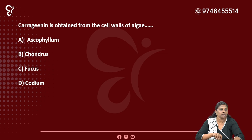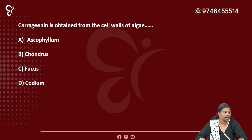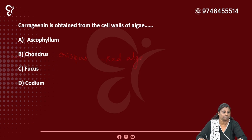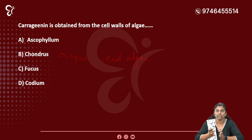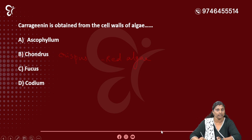Carrageenan is obtained from the cell wall of algae — specifically Chondrus crispus, which is a red algae. Red algae yield a polysaccharide called carrageenan from their cell wall. The common name for Chondrus crispus is Irish moss. That is very important.